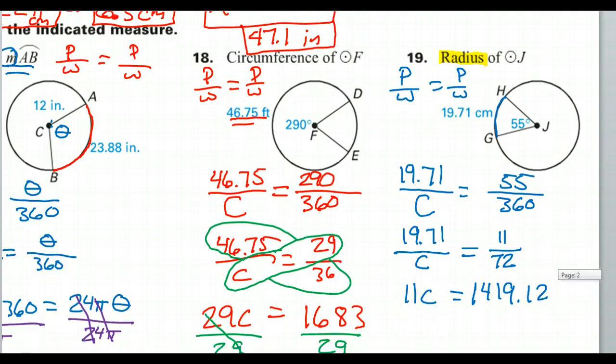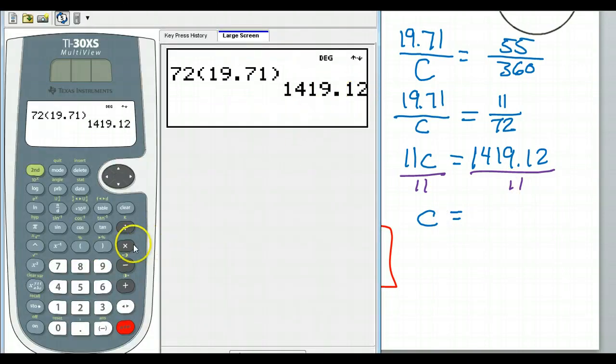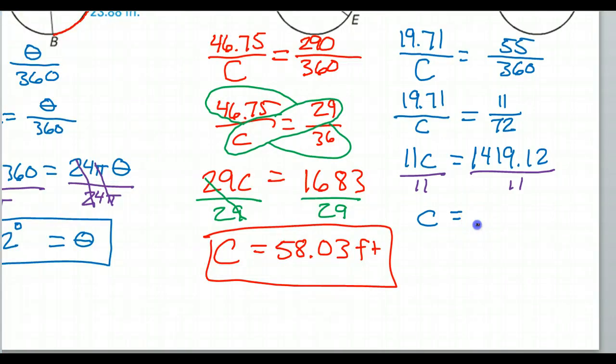So clearly we need to divide both sides by 11. Divided by 11. I'm going to go back to the calculator, the number's already there, so we can just hit divided by 11. So that is 129.01.